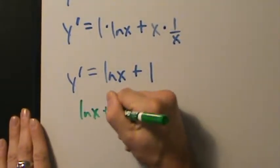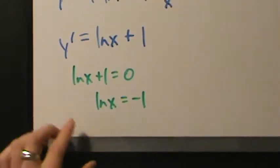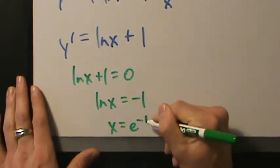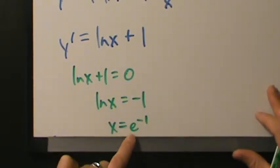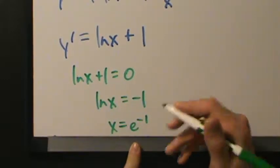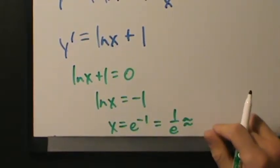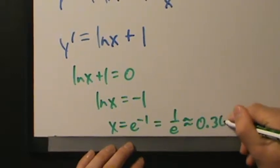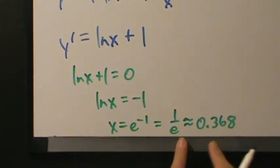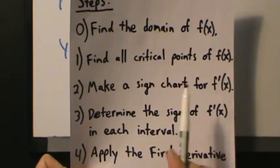What we can do is take the derivative and set it equal to zero. So natural log of x plus one equals zero, which means natural log of x equals negative one. This is really just a pre-calculus thing now. If natural log of x equals negative one, then that's the same as saying x equals e to the negative one. Natural log has base e, so from the definition, this means x equals e to the negative one, which is the same as one over e, approximately 0.368. This is our only critical point: e to the negative one, or one over e, or approximately 0.368.